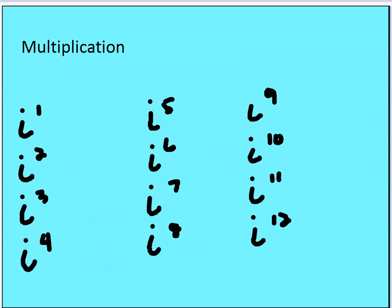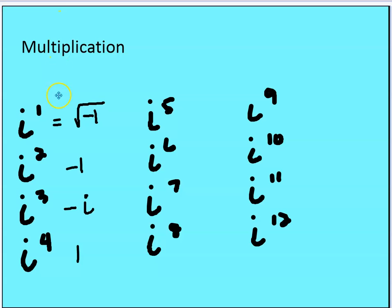Now let's look at multiplication and the powers of i. i to the power of one is the square root of negative one. Then i squared — we said — is negative one. i cubed is i squared times i, which is negative i. And i to the fourth is i squared times i squared, which is negative one times negative one, which equals one.